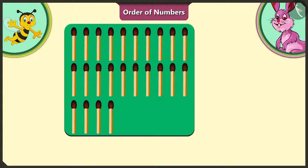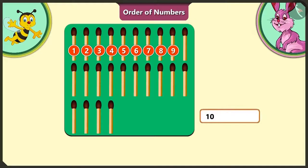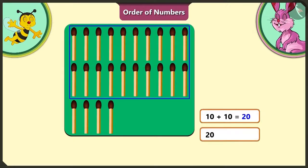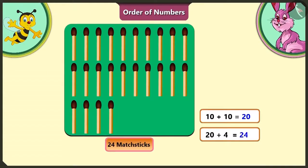Can you tell me how many matchsticks are there on the green card? The first group of matchsticks on the green card has 1, 2, 3, 4, 5, 6, 7, 8, 9, 10 matchsticks. If we add the next group to the first group of 10, there will be 20 matchsticks. And adding these 4 remaining matchsticks gives us 24 matchsticks in total.